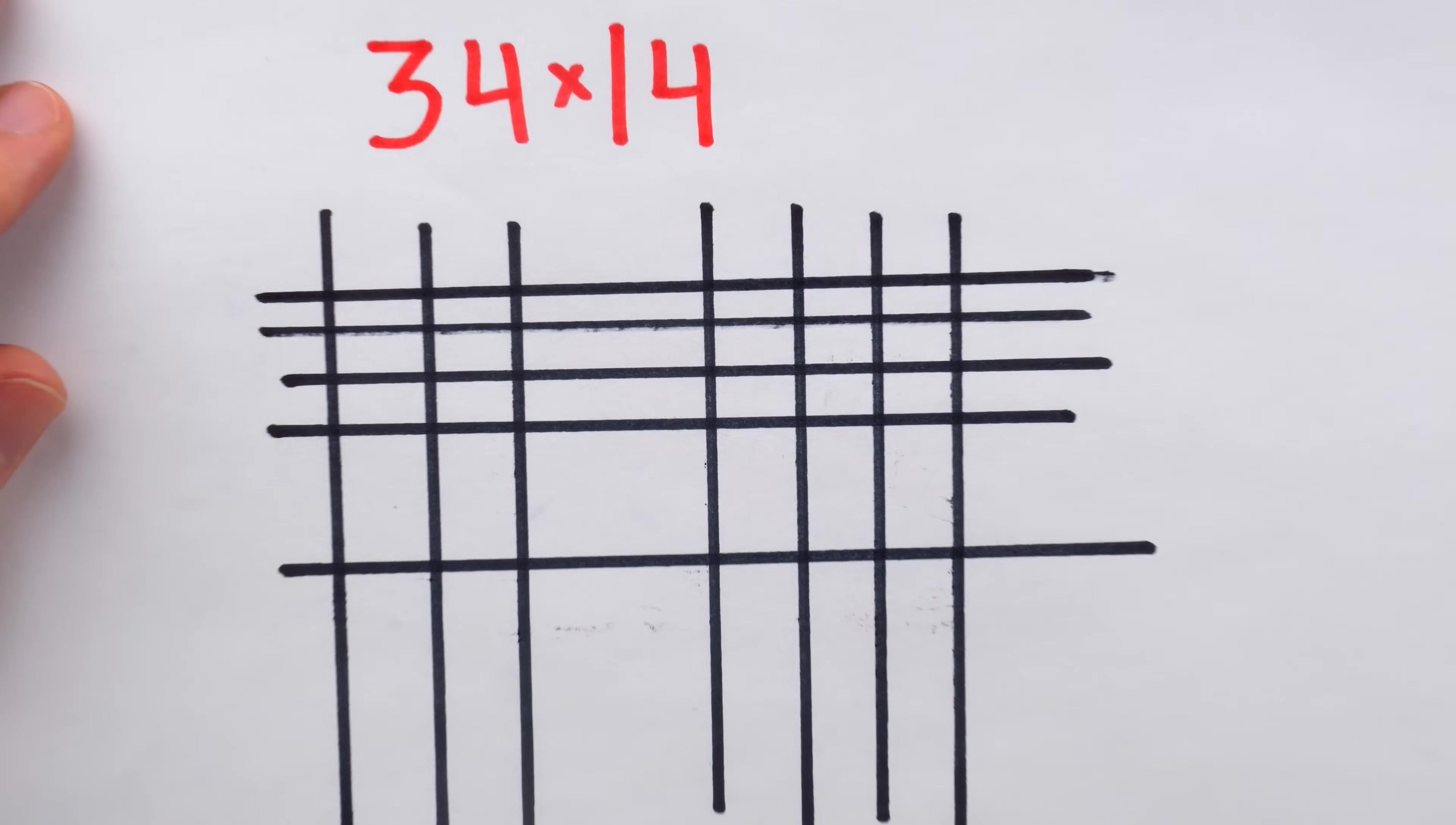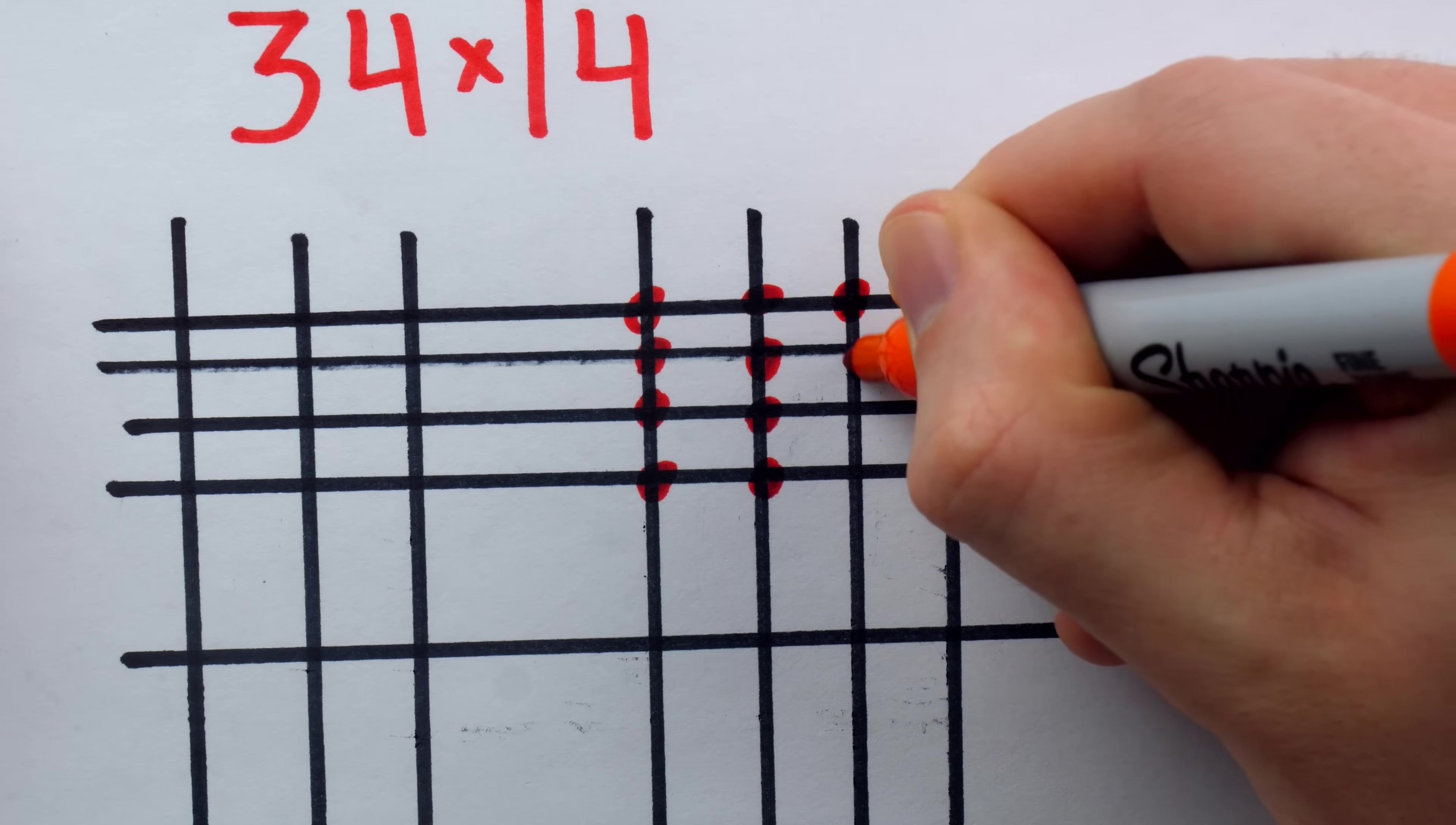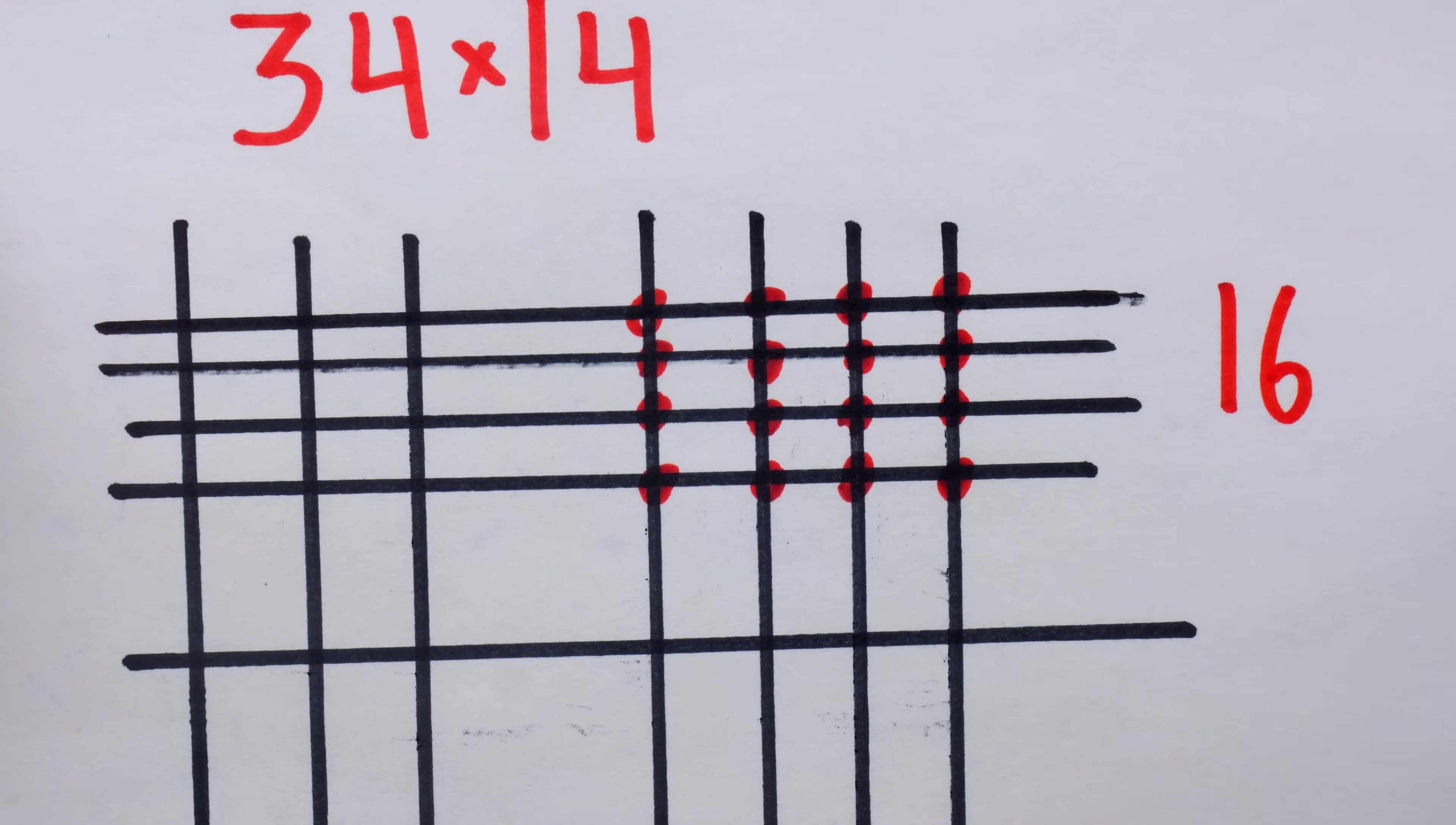So to exercise caution, I would count up these intersections and keep the totals separate and bring them together at the end. Counting up this clump, we have a total of 16 intersections. And since this is ones place times ones place, this is actually representing 16.